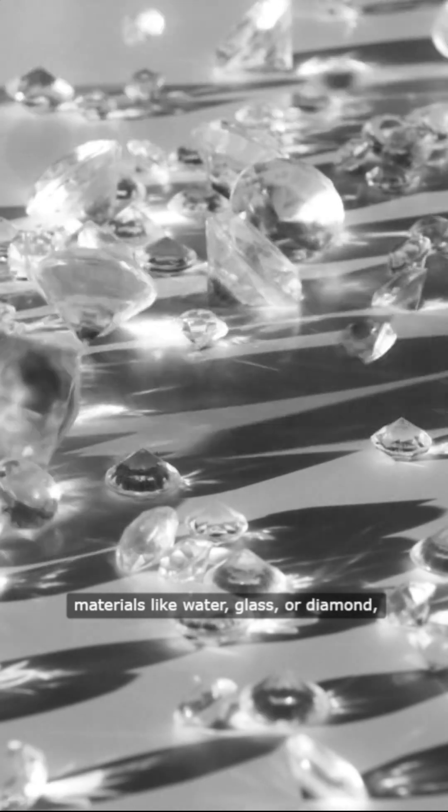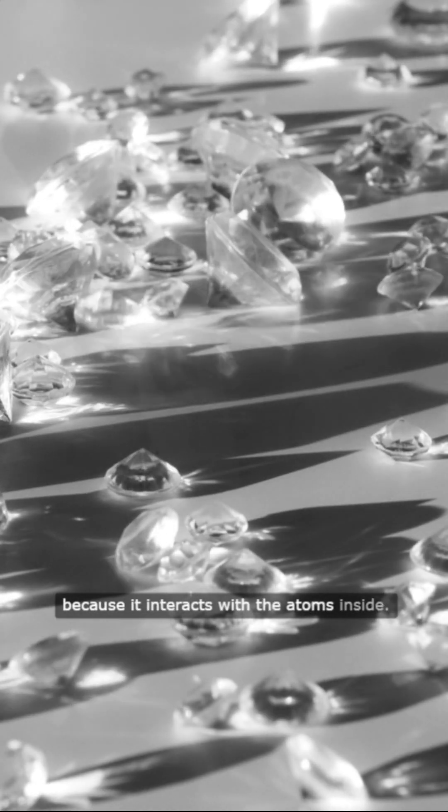In a vacuum, nothing outruns light. It moves at 300,000 kilometers per second, but light slows down when it passes through materials like water, glass, or diamond, because it interacts with the atoms inside.